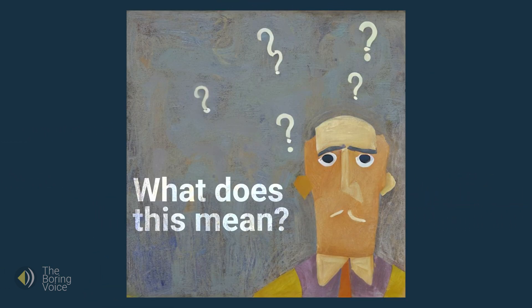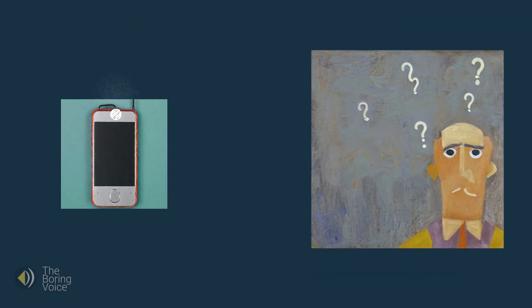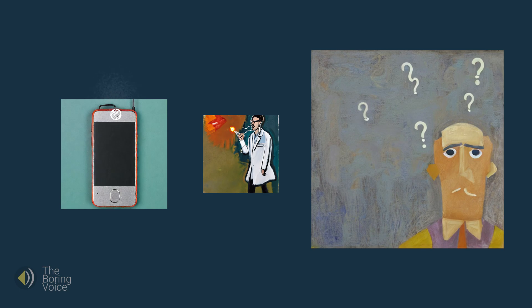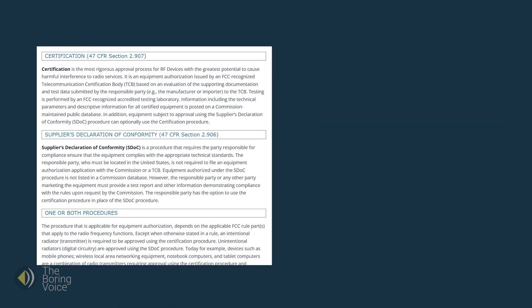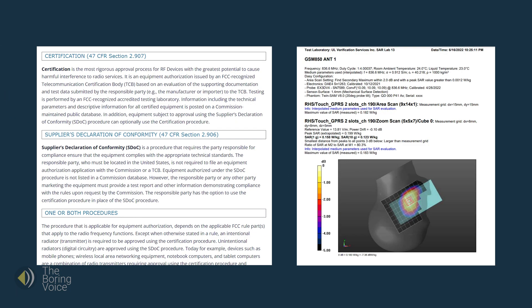But what does this ID mean for you? It means that the device has been tested by a compliance testing laboratory and is compliant with FCC Part 15 regulations on RF energy emissions. Anytime a wireless device is approved, the application and the laboratory testing results are placed in a publicly accessible government FCC database.